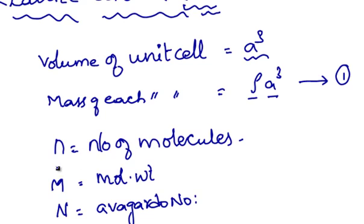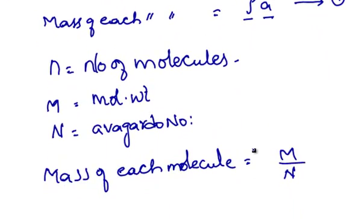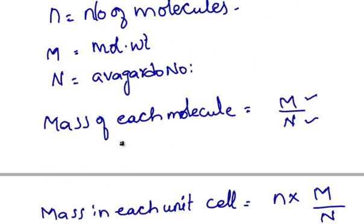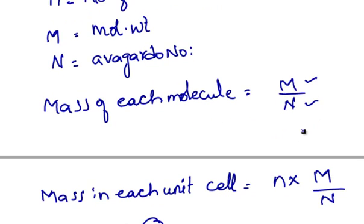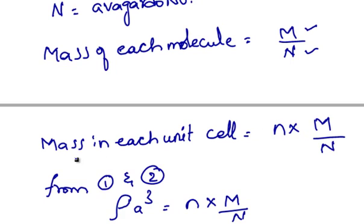n is equal to number of molecules, m is equal to molecular weight, and N is equal to Avogadro number. Then mass of each molecule can be given as molecular weight by Avogadro number. That is mass of each molecule is equal to capital M by capital N. Mass in each unit cell is equal to number of molecules in the unit cell into mass of each molecule, that is n into m by N.